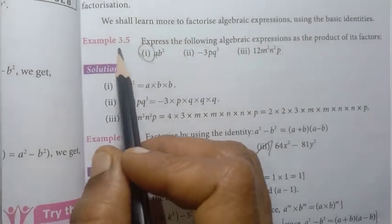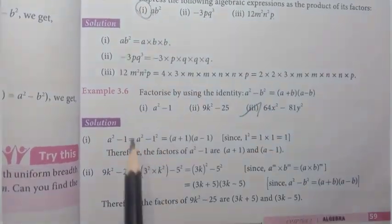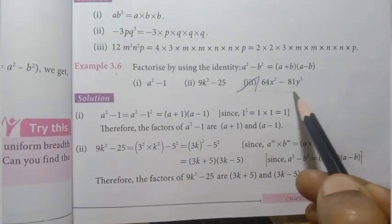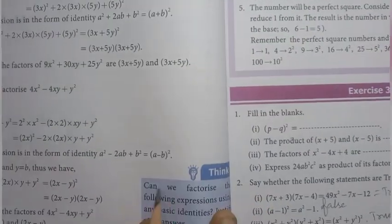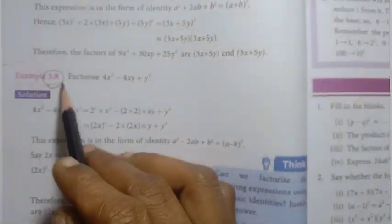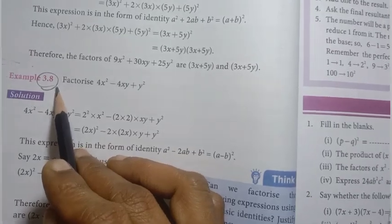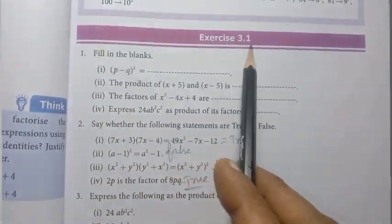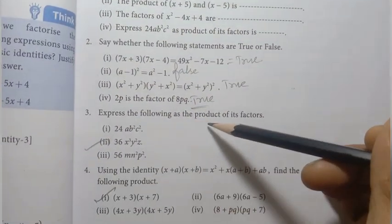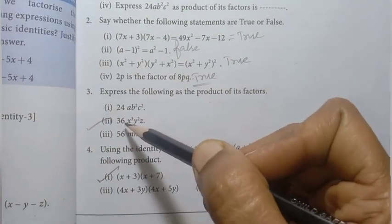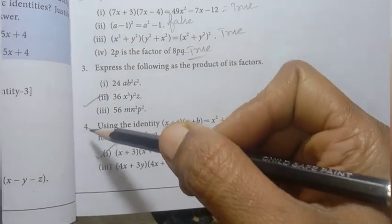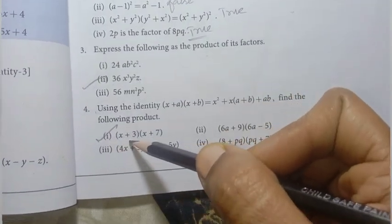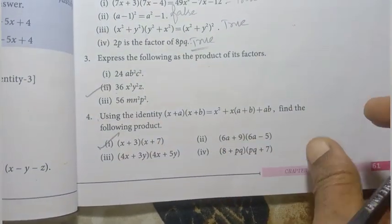Algebraic expressions: example 3.5, first one. Example 3.6 — previous year question: 64x² minus 81y². Page number 60, example 3.8. Page number 61, exercise 3.1: express the following as a product — second one: 36x³y²z — previous year question. Fourth one, first one: (x+3)(x+7) — previous year 3rd midterm question.